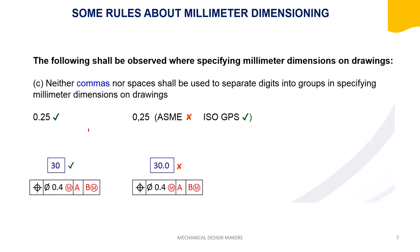In ASME standard, a decimal point is used to separate digits. In ISO GPS, a comma is used to separate the digits. So 0.25 in an ASME drawing is equal to 0,25 in an ISO drawing — both are the same value.